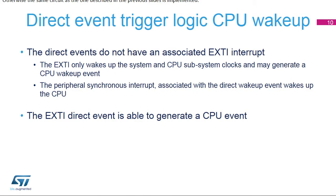A direct event is able, through the EXTI controller, to generate a CPU event and trigger a system wake-up. The active edge of direct events is the rising edge. Direct events do not rely on the EXTI controller to assert interrupt requests because they have their dedicated lines to the NVIC. Otherwise, the same circuit as described in the previous slides is implemented. Direct events can be independently masked for event generation and interrupt generation. The interrupt mask is only used as a wake-up mask.